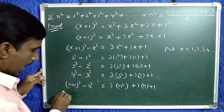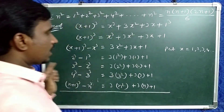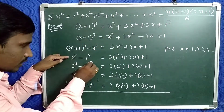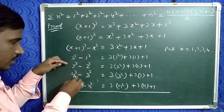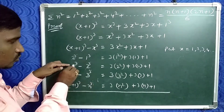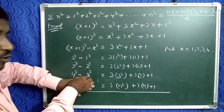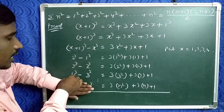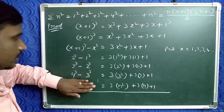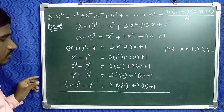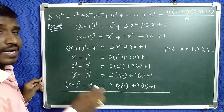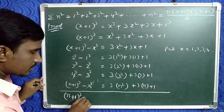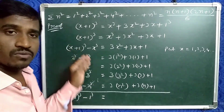Now add all these equations. On the left side, it is a telescoping series: 2³ cancels with 2³, 3³ cancels with 3³, 4³ cancels with 4³, and so on. The remaining terms on the left are (n+1)³ − 1³.